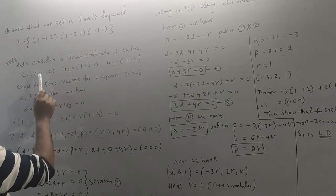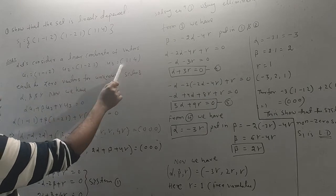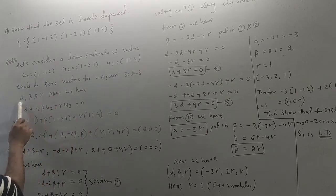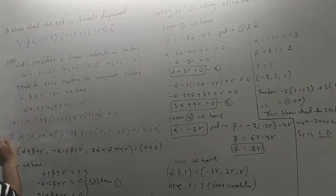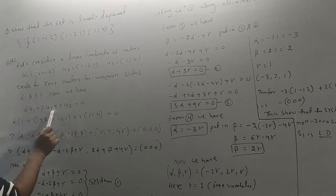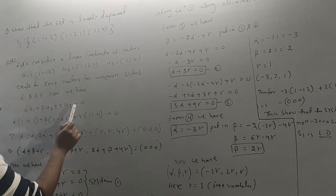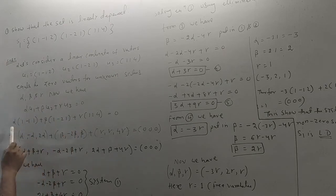What are the vectors? U1 is the first vector, U2 is the second, U3 is the third, and the zero vector is theta. The unknown scalars are alpha, beta, and gamma. So the linear combination formula is: alpha·U1 + beta·U2 + gamma·U3 = 0.